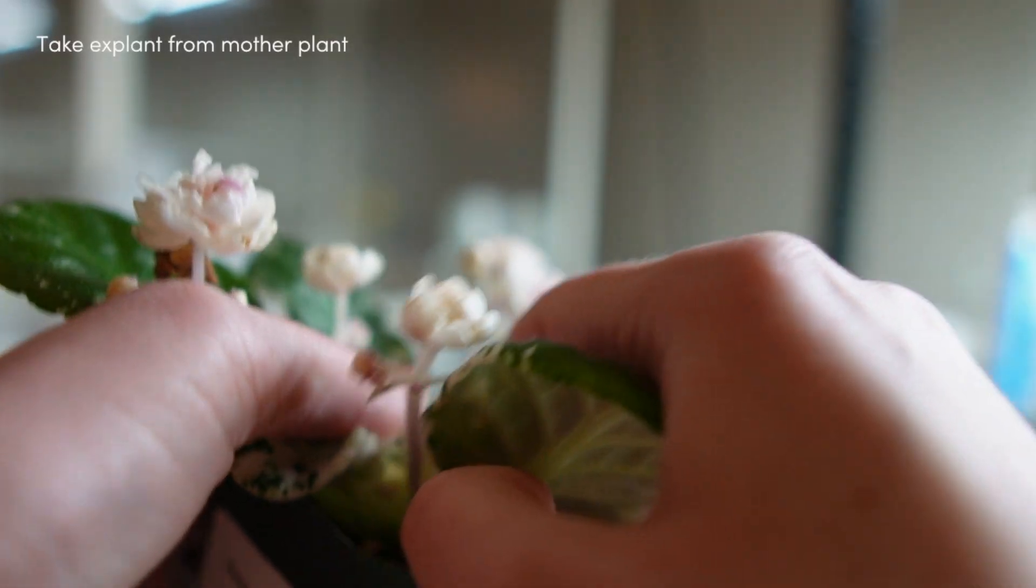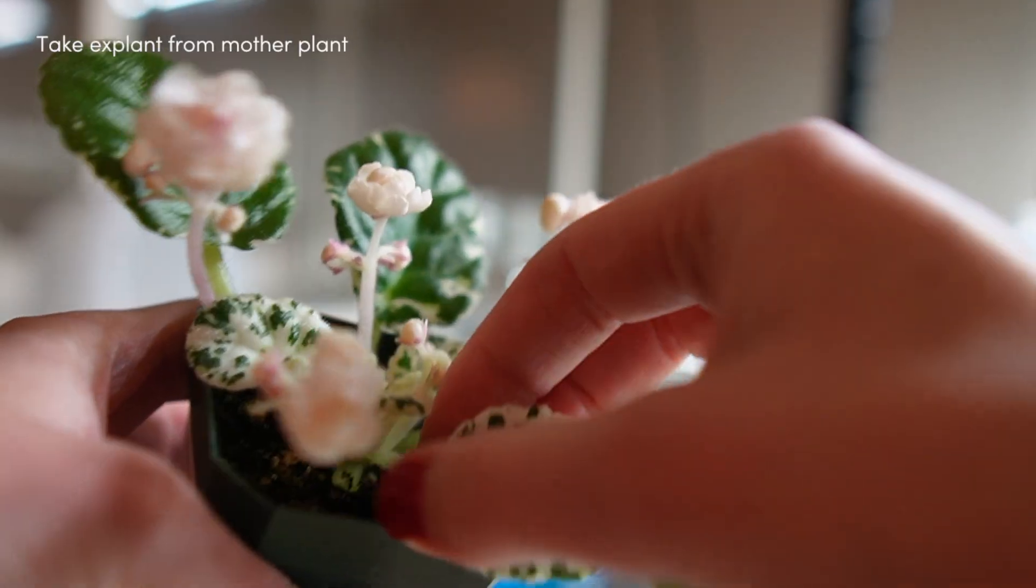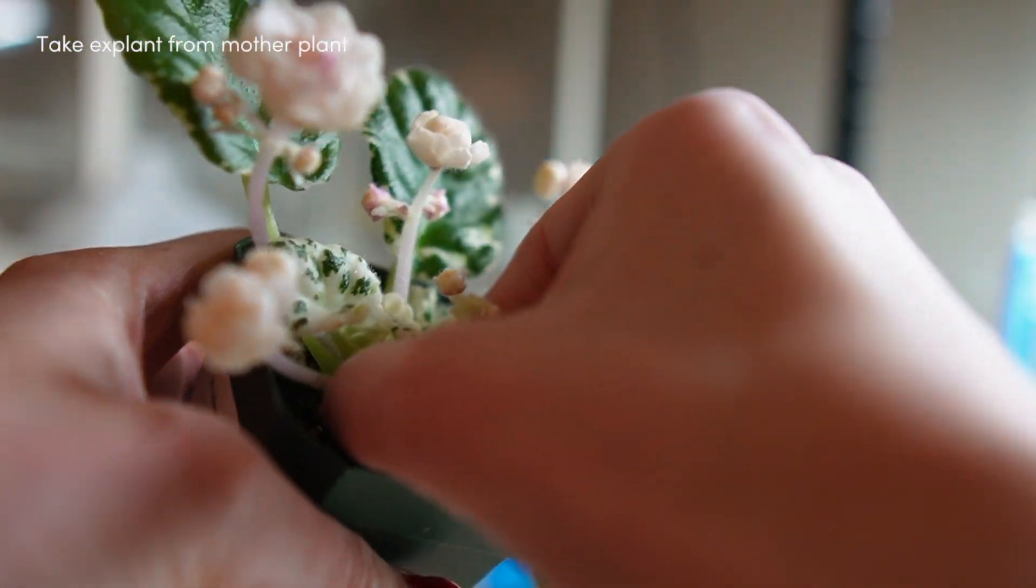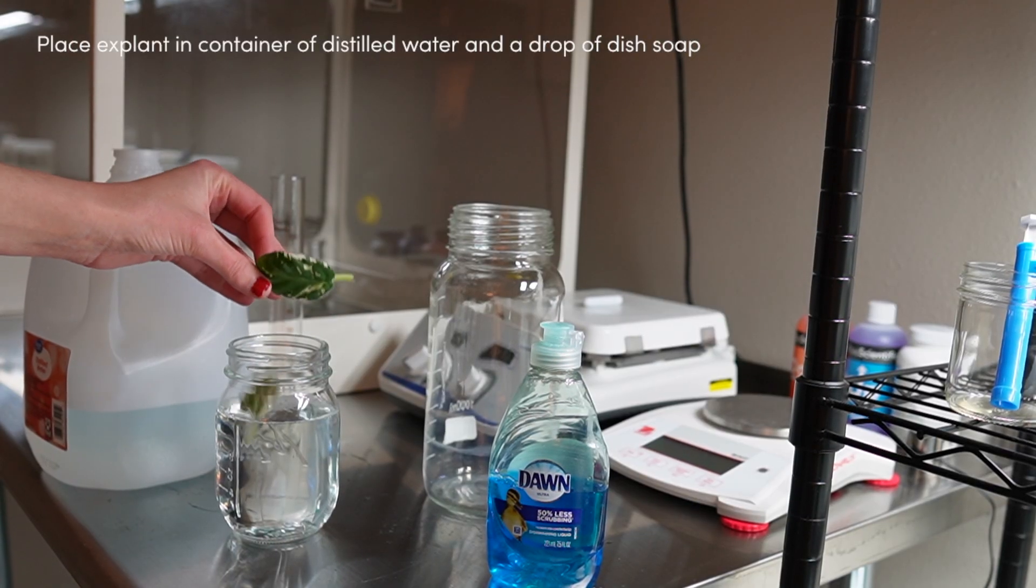Today I'll be establishing an African violet in tissue culture. Establishment is the first stage in the tissue culture process. There are four stages total: establishment, multiplication, rooting, and transplanting.